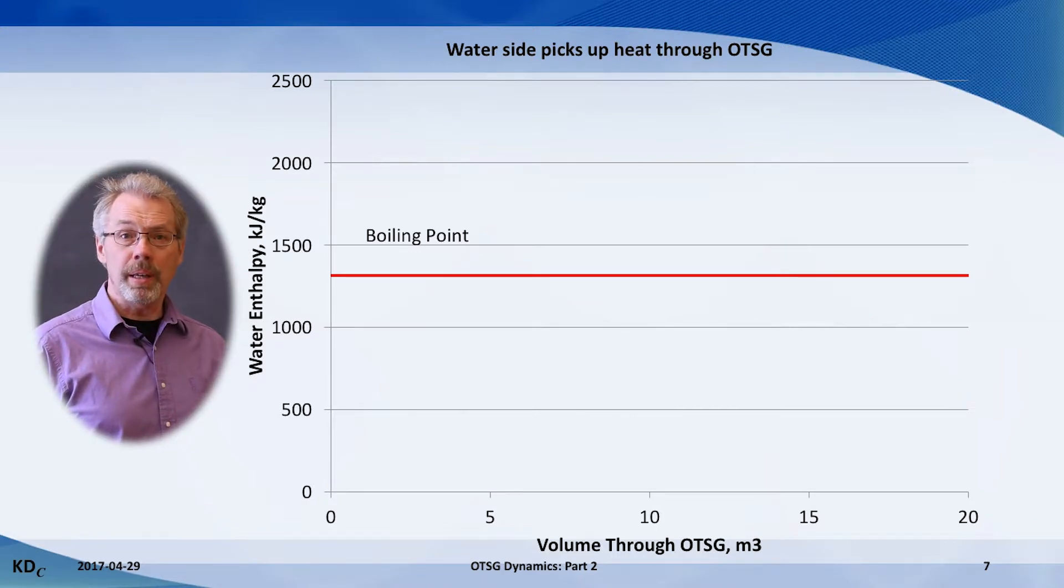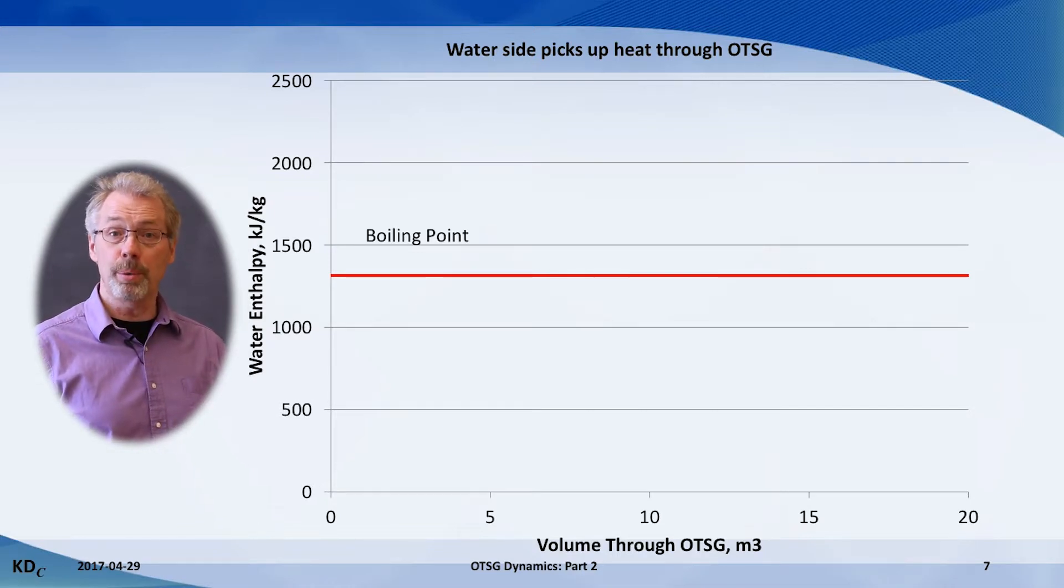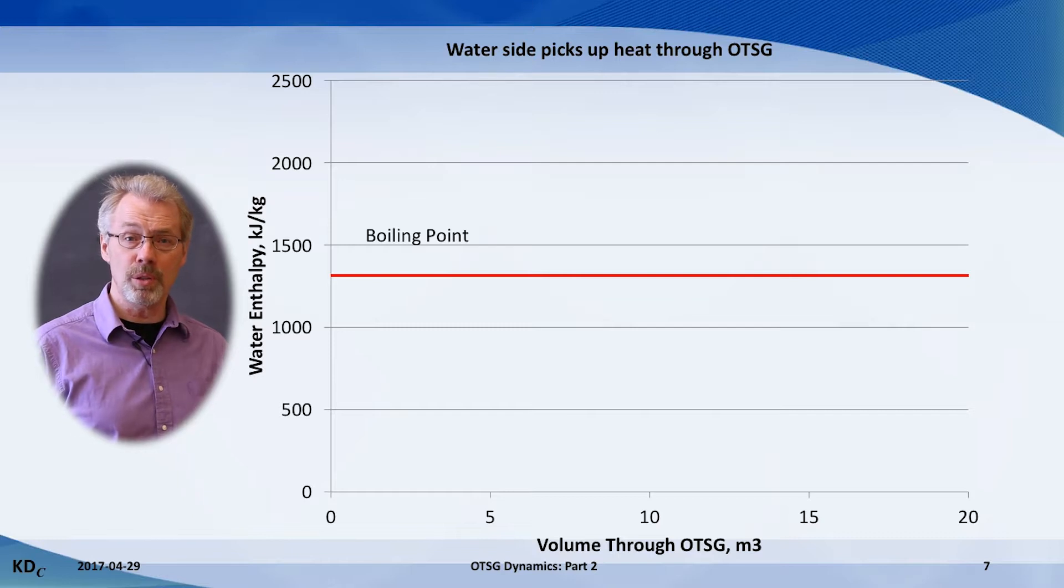This graph will demonstrate how the enthalpy of a lump of water changes as it makes the trip through the OTSG. On the bottom axis is the volume traveled through the OTSG. There's typically 20 cubic meters of volume in an OTSG, with 10 cubic meters in the convection section and another 10 in the radiant section.